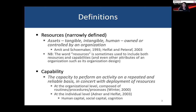Here's how I define these things. A resource, narrowly defined, is an asset of some type — tangible, intangible, and human — that's owned or controlled by an organization. The literature sometimes uses the word resources very broadly; even Jay Barney's early work included any attribute of the organization as a resource. This is one reason why definitions are useful — whenever you talk or write, say here's what I mean. And a capability? The number of things written about what is or isn't a capability is enormous.